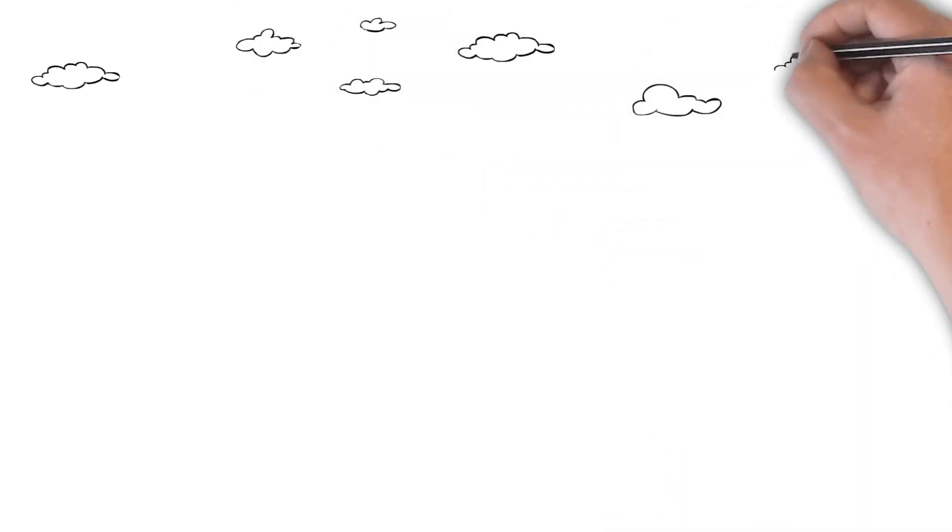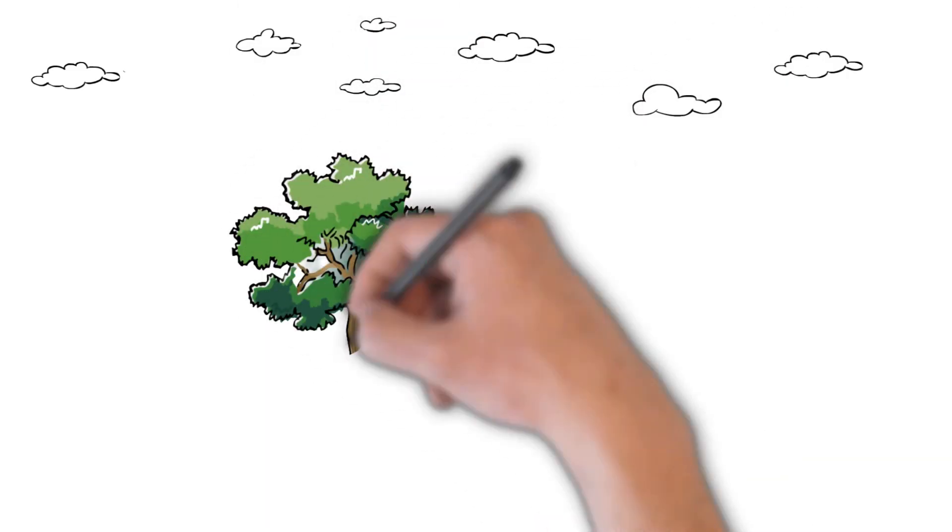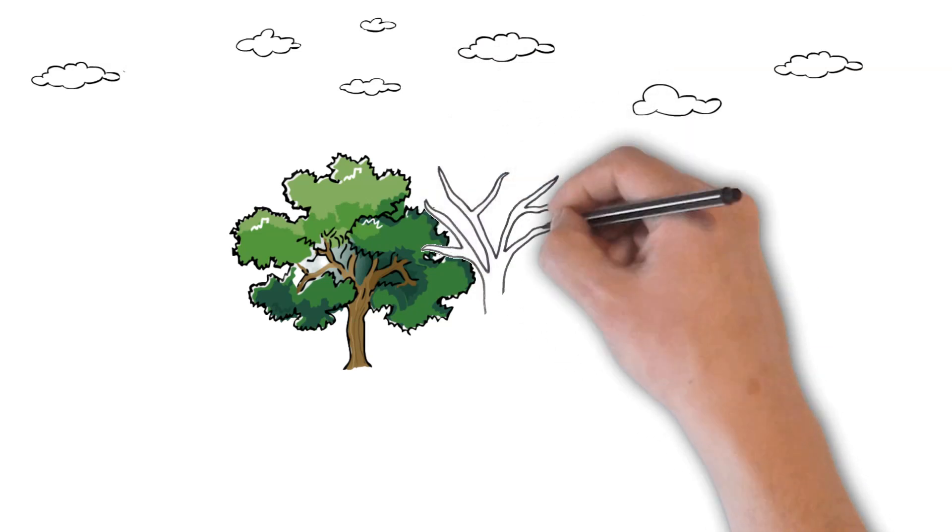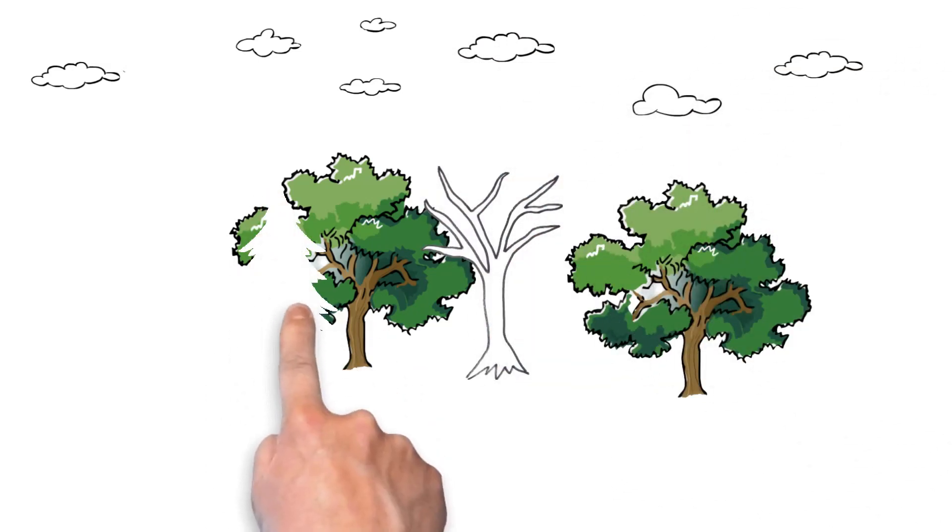So let's draw an untreated area. In this untreated area you're going to see there's a lot of trees. Some are healthy, some are unhealthy or maybe even dead. Some of the trees are native, some of them are non-native.